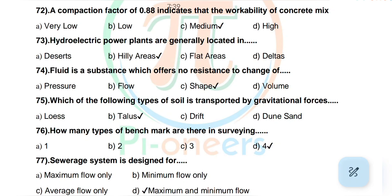Question number 72: A compaction factor of 0.8 indicates that the workability of concrete mix is very low, low, medium, or high. Correct answer: medium.